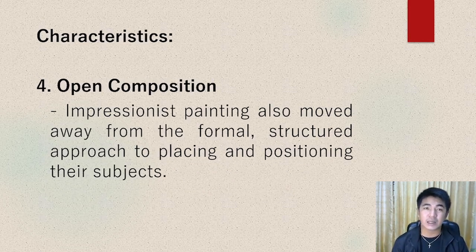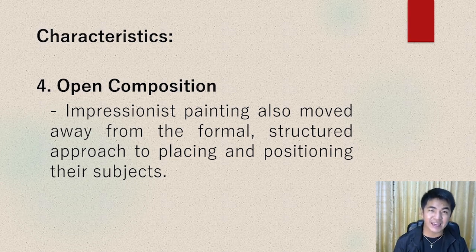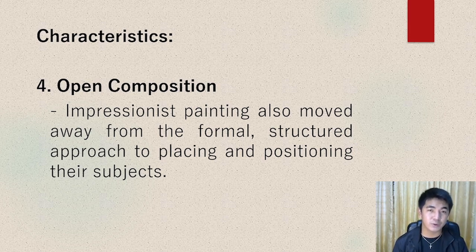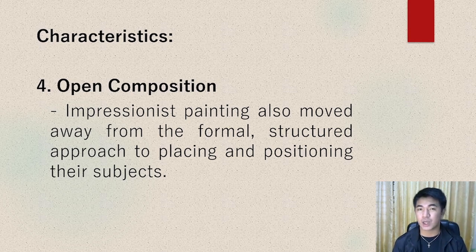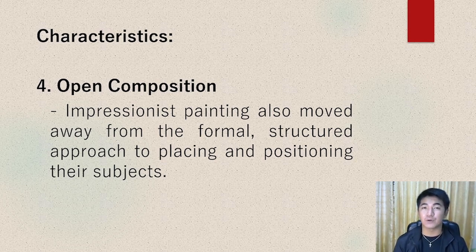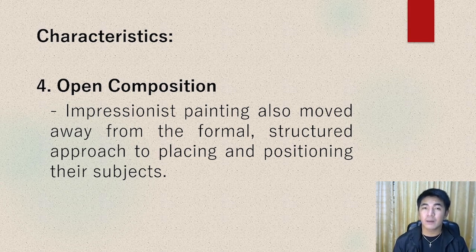For our last characteristic of impressionism, we have open composition. Impressionist painting moved away from the formal, structured approach to placing and positioning their subjects. Before, artists painted inside the studio placing objects in front of them. Open composition means they considered perspective — one of the principles of design — capturing their subjects from different angles to make them more dramatic, more valuable, and more artistic.